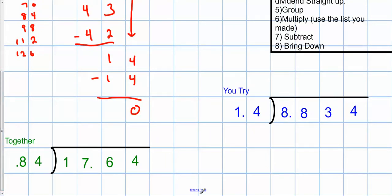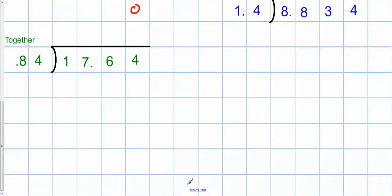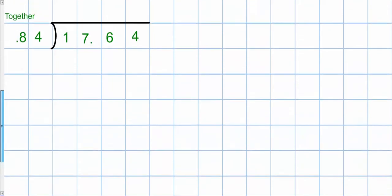So let's do one more together. I need a little more space than this. Remember, what's the first thing I have to do? Move my decimal point over. How many times did I move it? I moved it once.